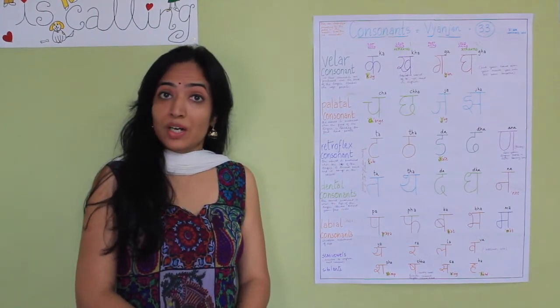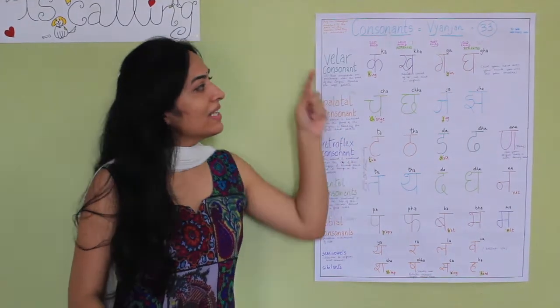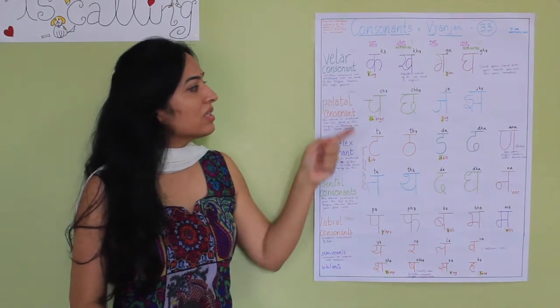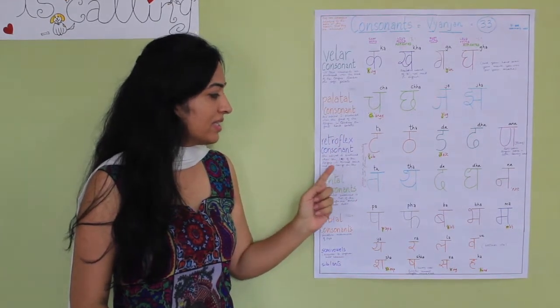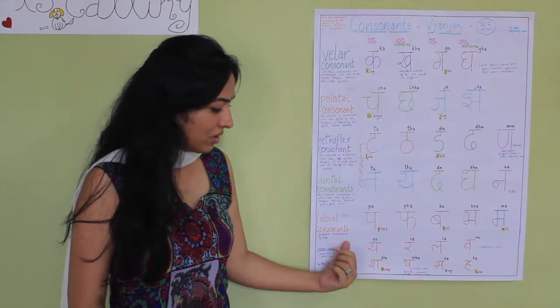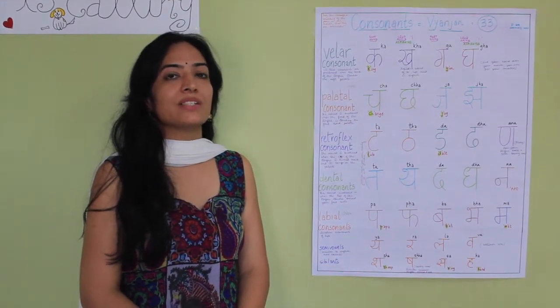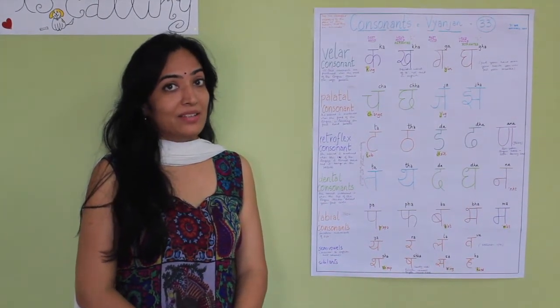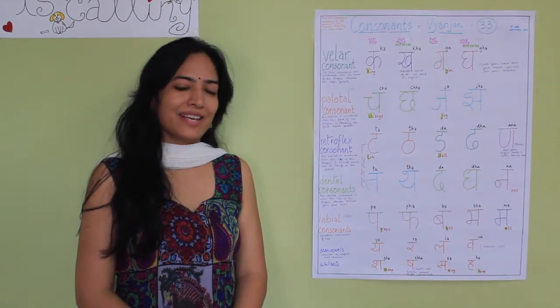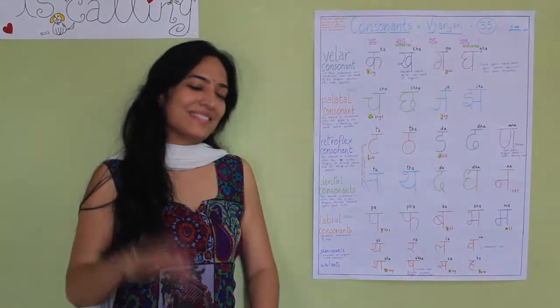Oh and what's a class without homework? All what you need to do is repeat the velar consonants, palatal consonants, retroflex consonants, dental consonants, labial consonants, semi-vowels and sibilants. Again and again till you do it perfectly. And practice makes a man perfect. Yes. So you do it. I know it. Ta-da.